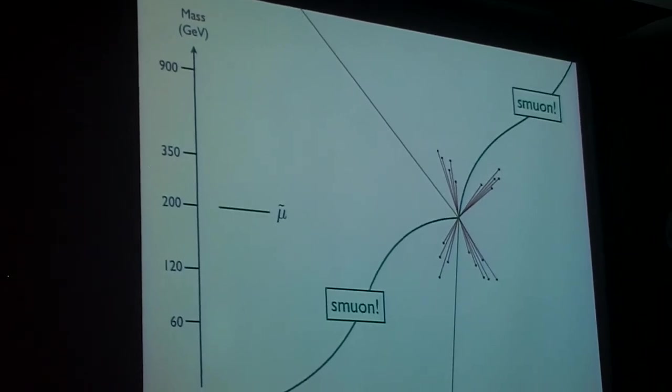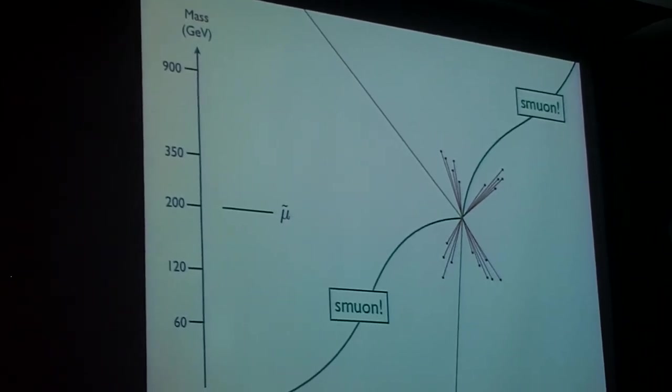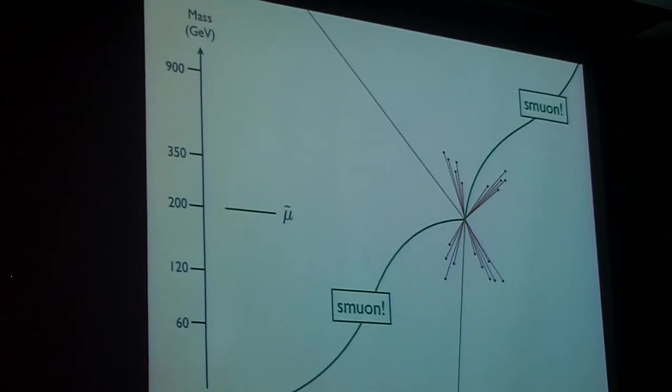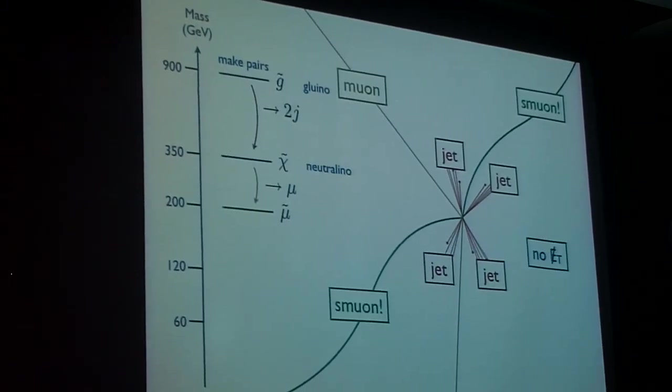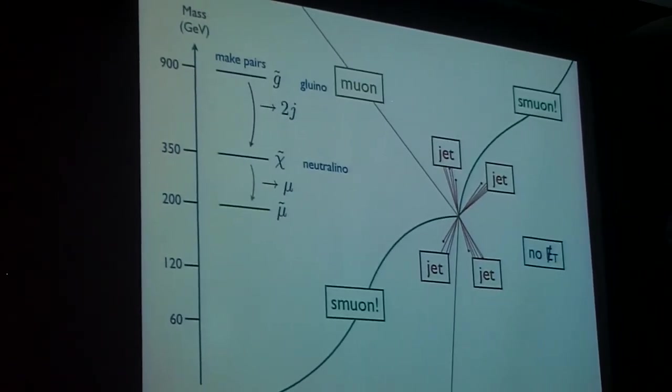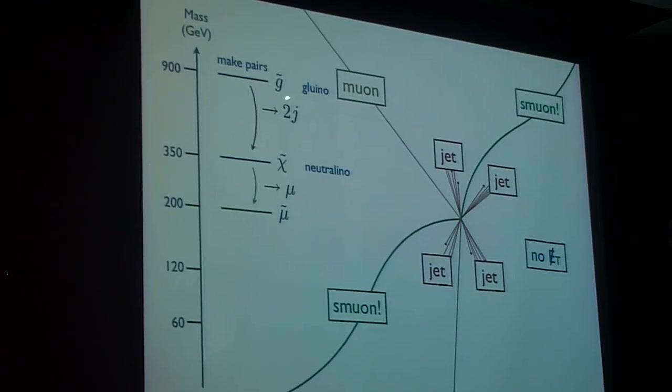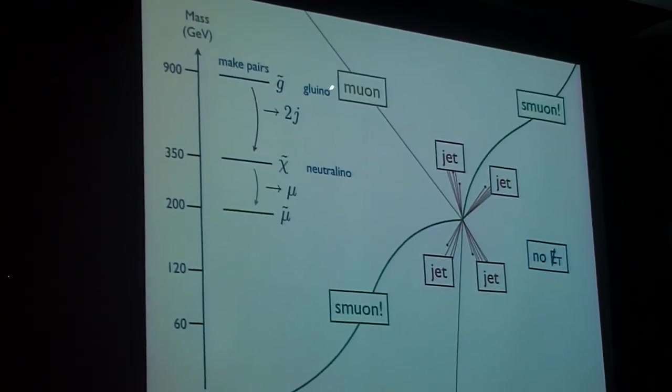There's other sorts of junk in this event, and this junk is just coming from other supersymmetric particles being produced. Actually what's happening in this event is that we have QCD pair production of the partner of the gluon, the gluino...